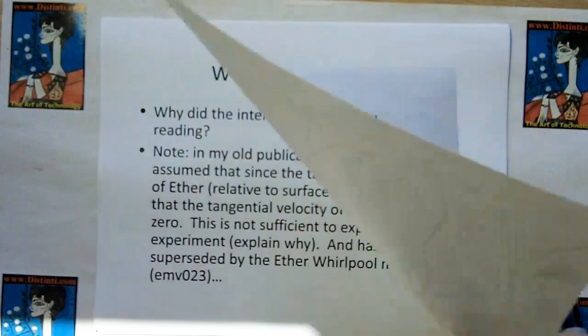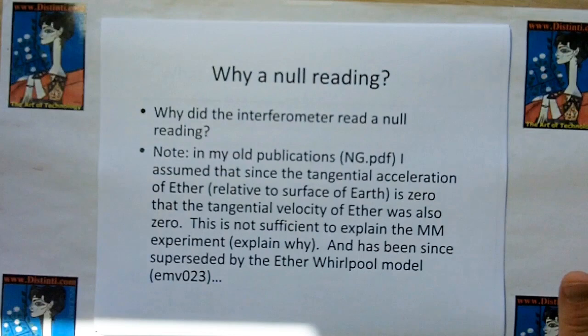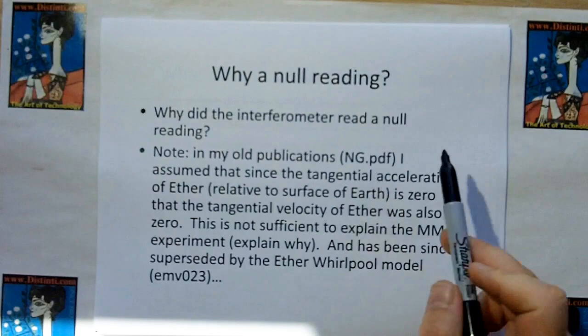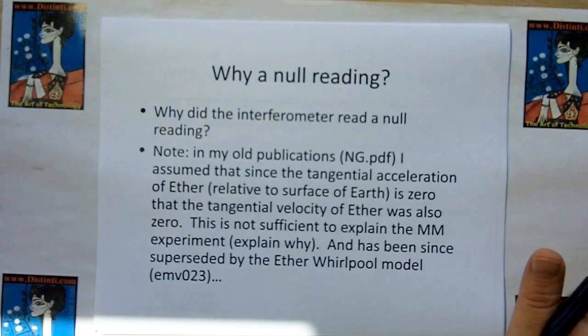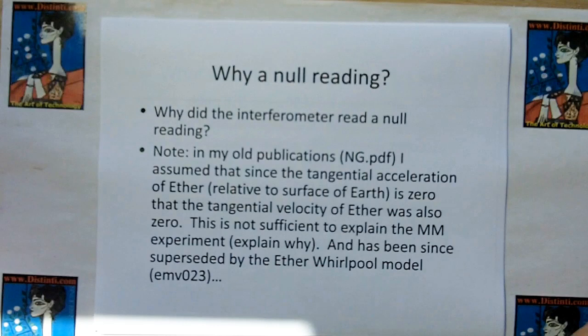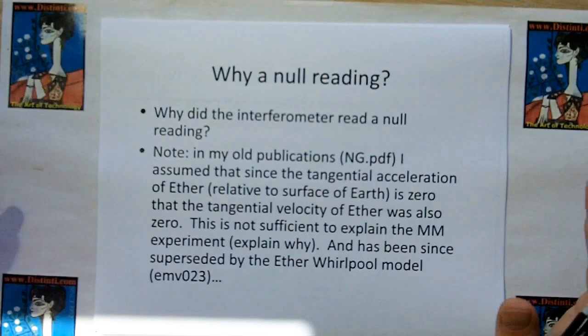Why did they get a null reading? Let me add a disclaimer: my older publications, including newgravity.pdf, assumed that since the tangential acceleration of the ether relative to the surface of the earth is zero, the tangential velocity must also be zero. But even if that were the case, it's still not sufficient to explain the Michelson-Morley result, because even if the surface velocity of the ether is zero, you should still be able to use the interferometer to measure velocity of something in motion relative to the ether. So more explanation is needed.